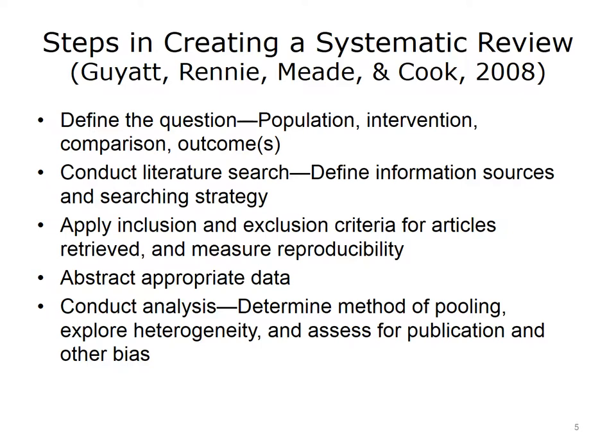Once we identify the articles that we're going to use in the systematic review, we abstract the data from them and then conduct the analysis. For example, if we're going to perform a meta-analysis, we determine the method of pooling and explore the heterogeneity of the results — whether some results point in one direction of a treatment and other results point in a different direction. We also assess for publication and other types of bias.